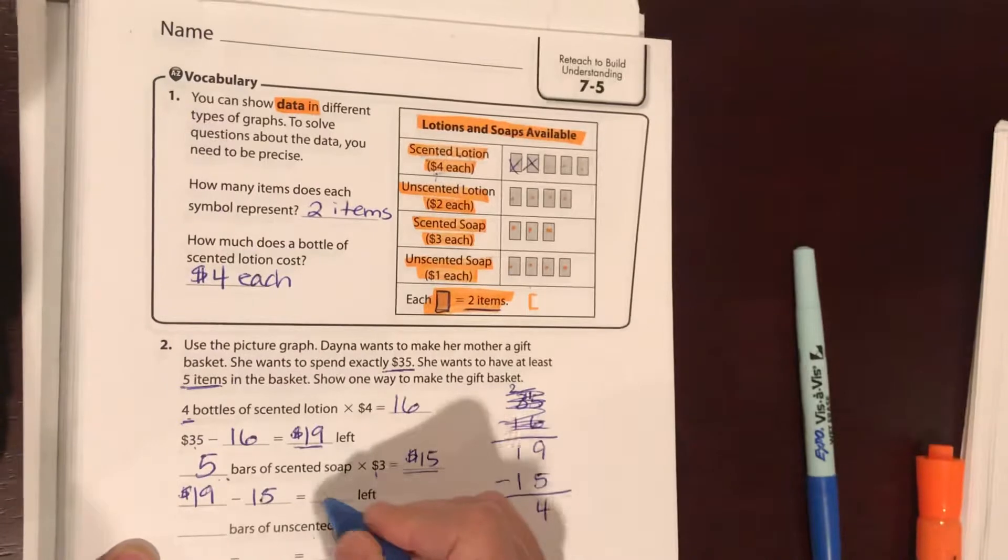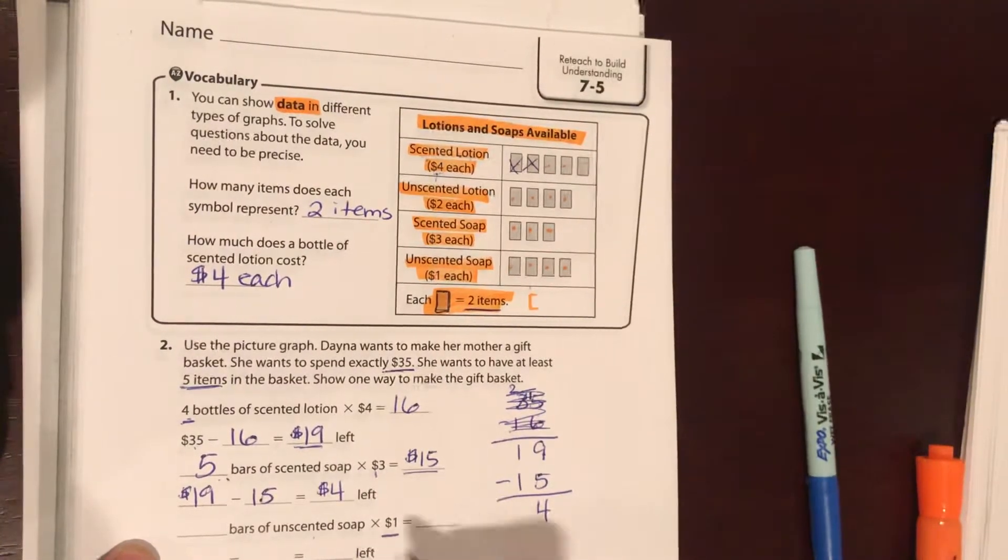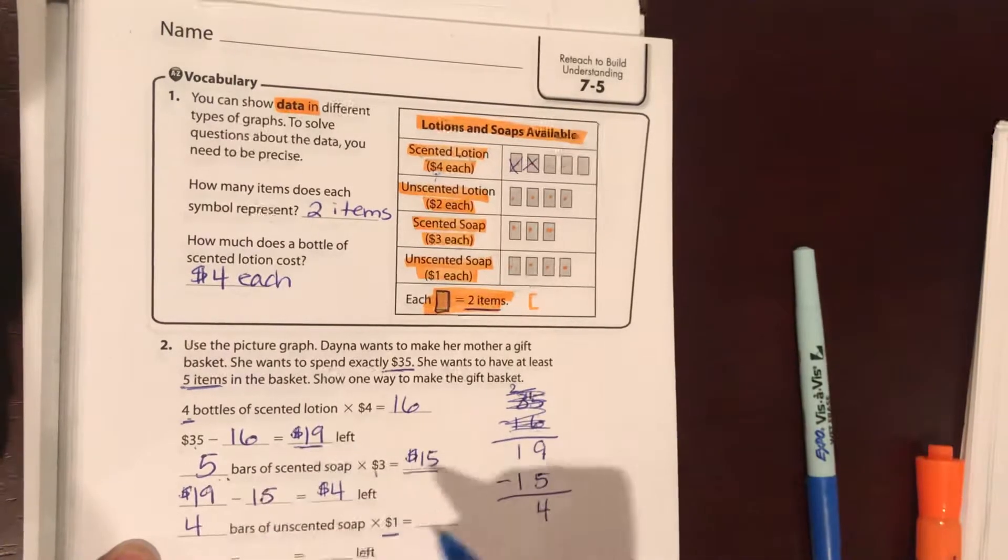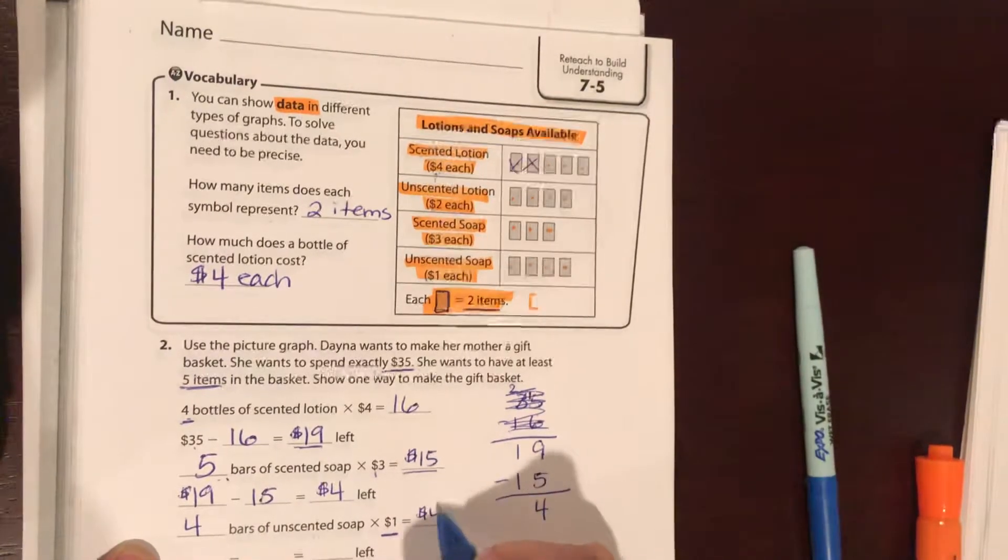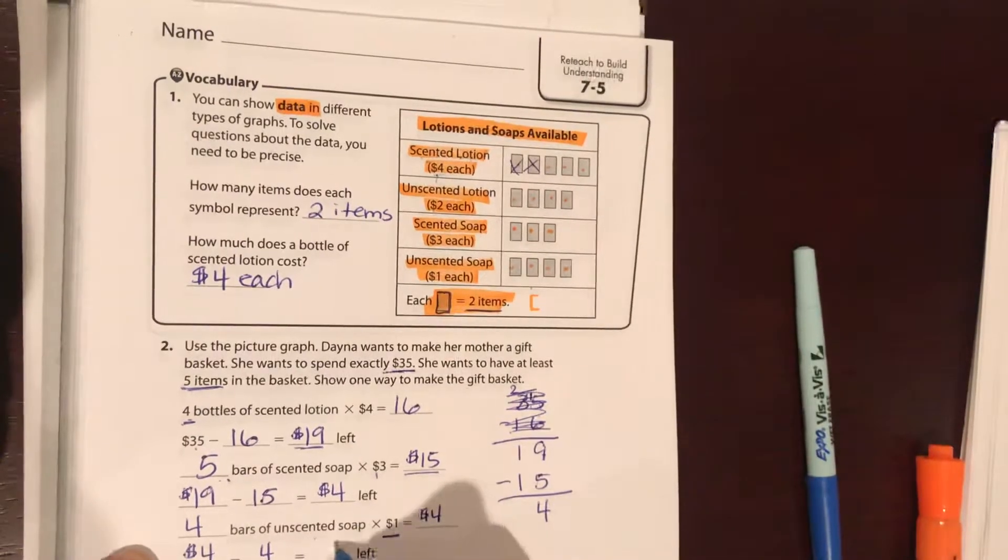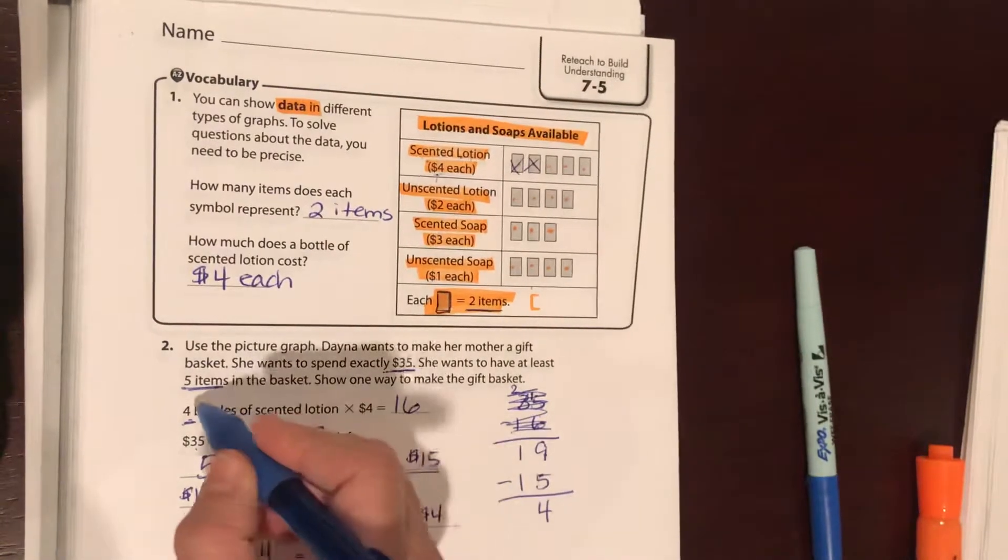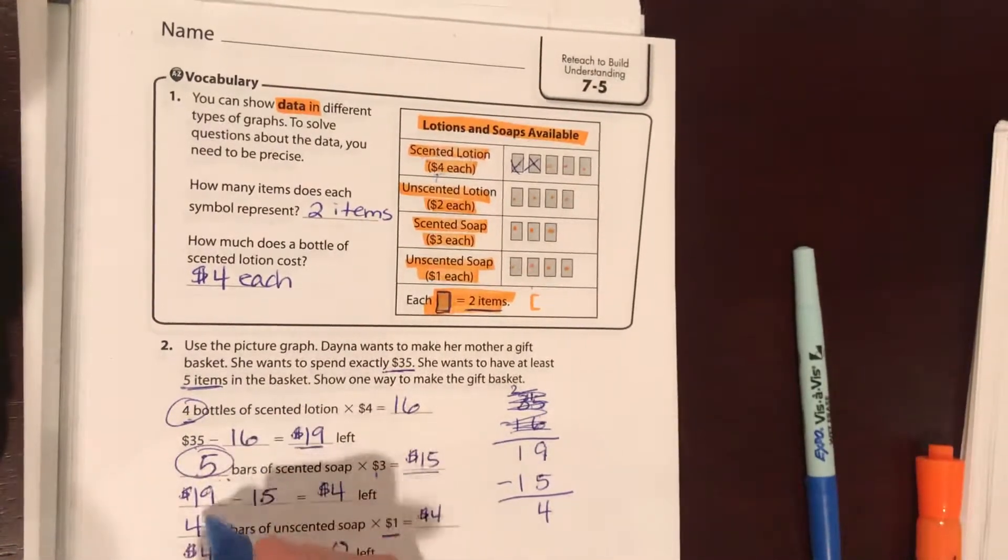We have four dollars left. The bars of unscented soap are one dollar each, so let's get four of those. That'll be four dollars, and four dollars minus four dollars equals zero dollars left. Perfect.